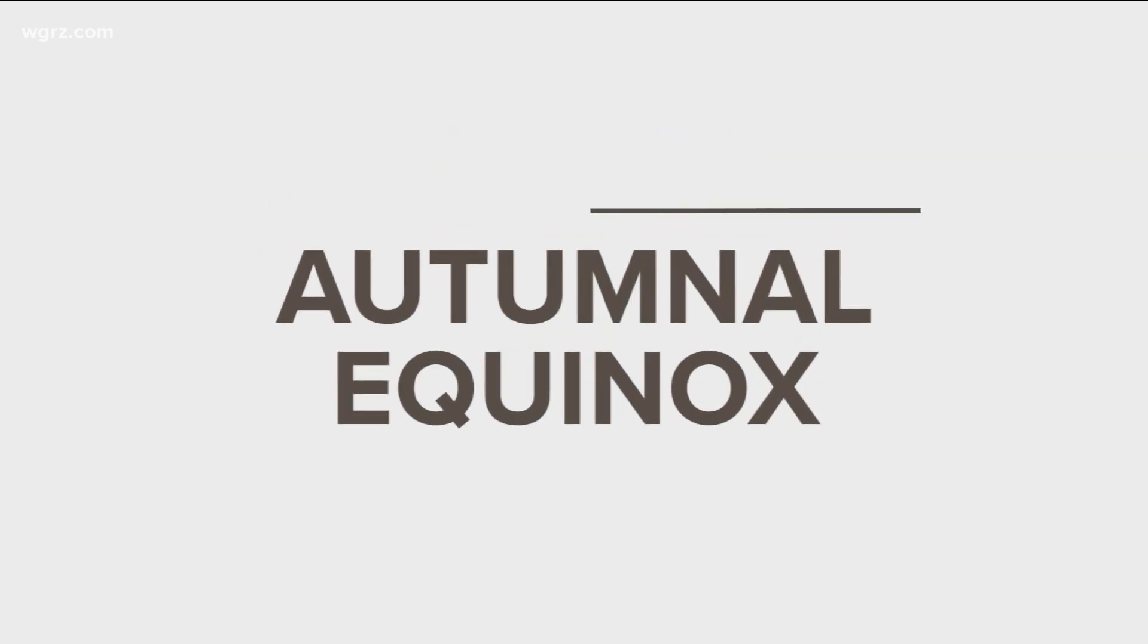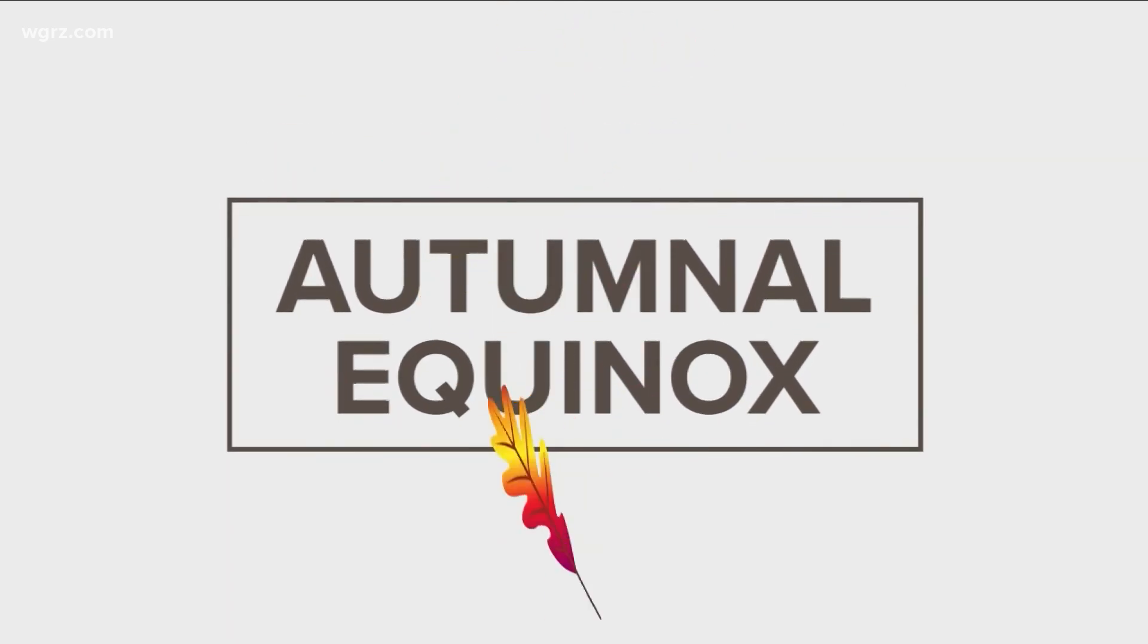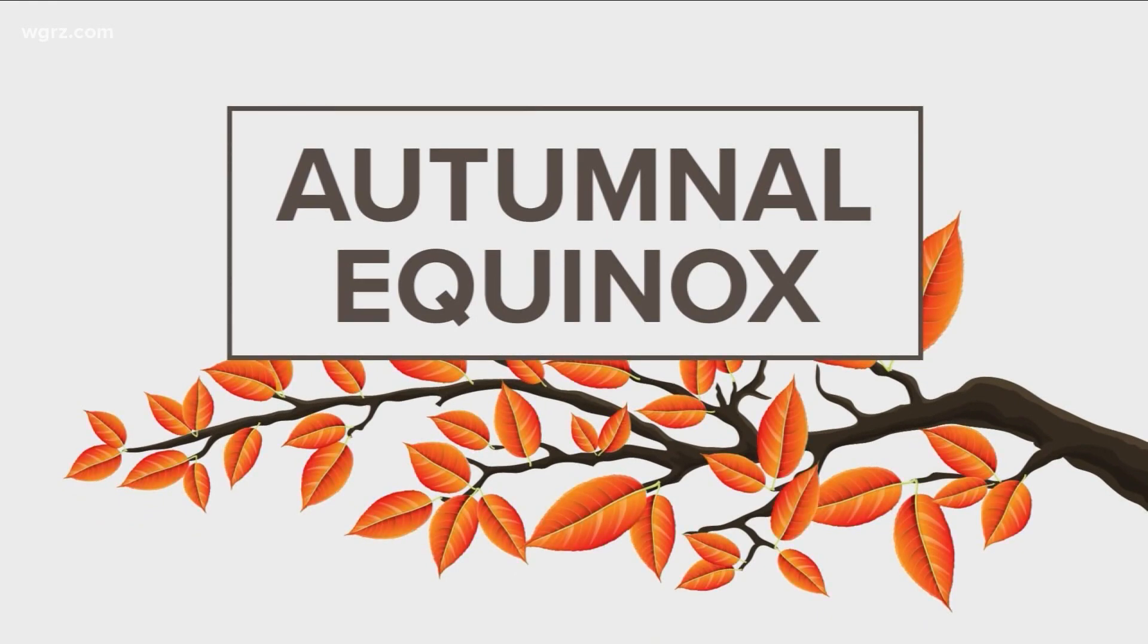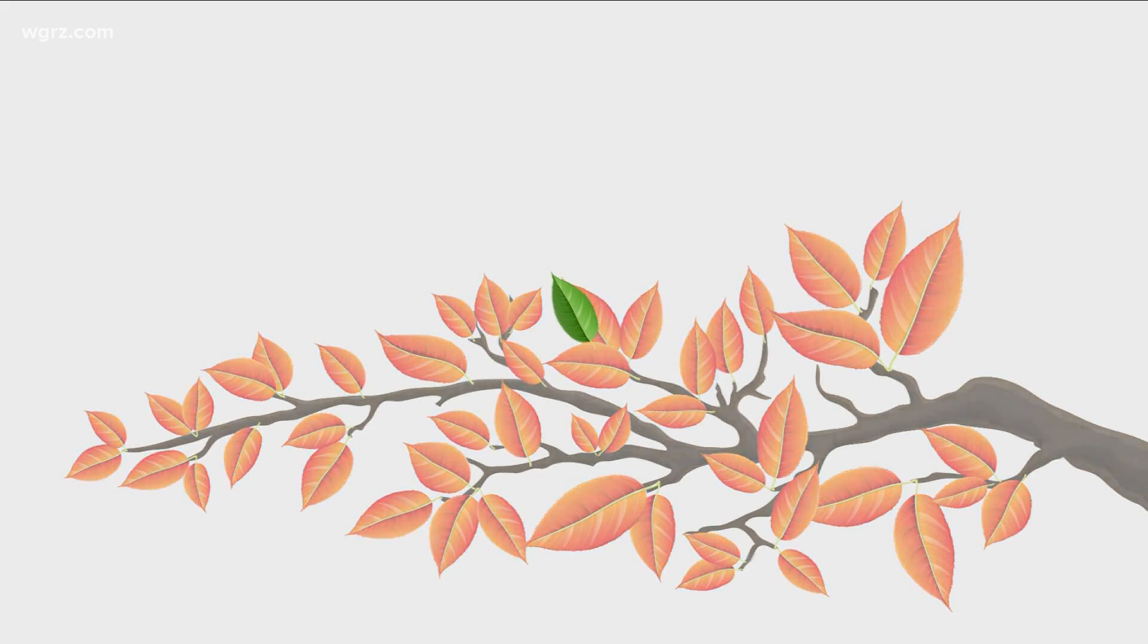September 22nd, it's a special day on the calendar because it marks the autumnal equinox, our first official sign of fall. And that's when leaves began their seasonal color change. Now how does this happen? It starts with the leaves themselves.